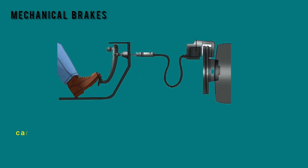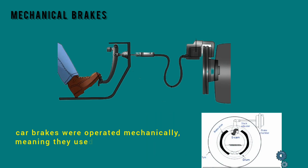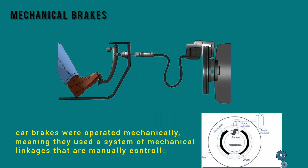Mechanical Brakes. Car brakes were operated mechanically, meaning they used a system of mechanical linkages that are manually controlled by a lever to transmit braking force.